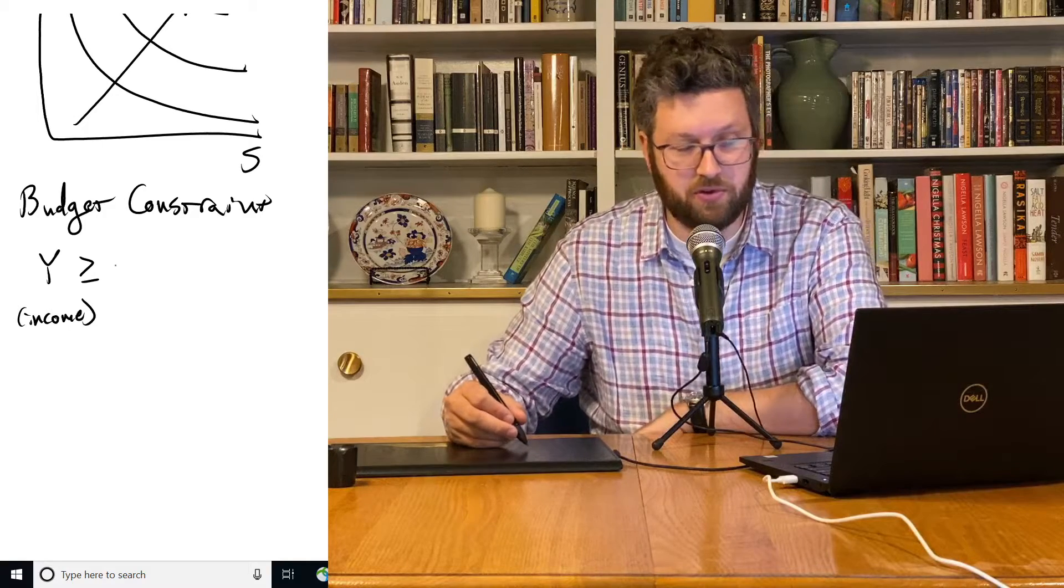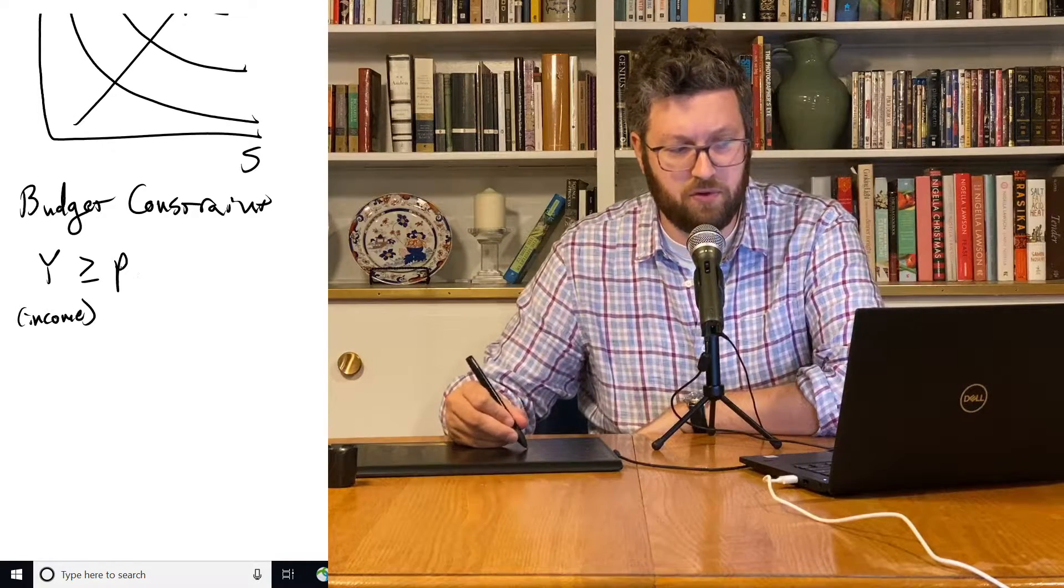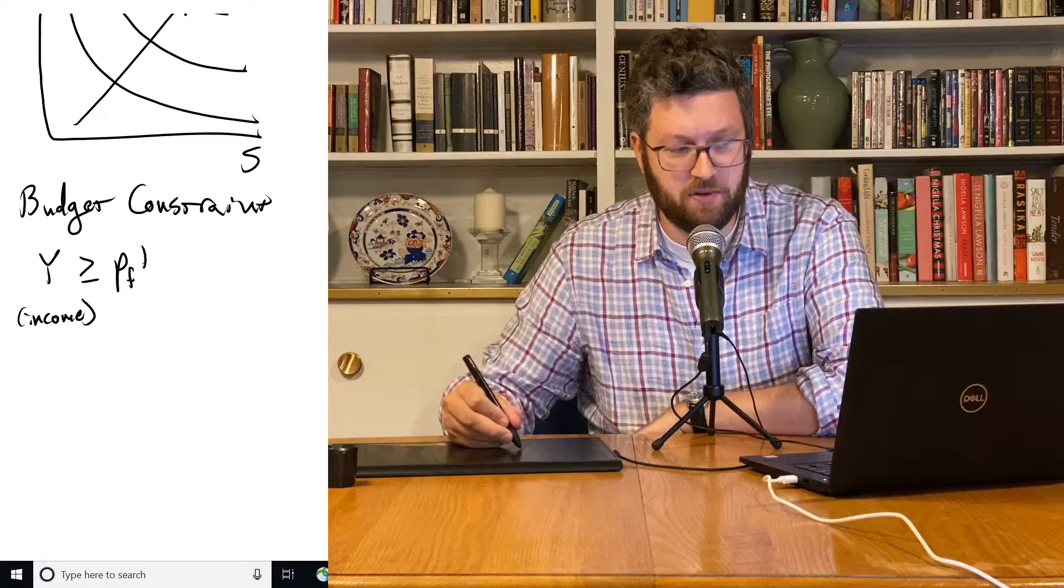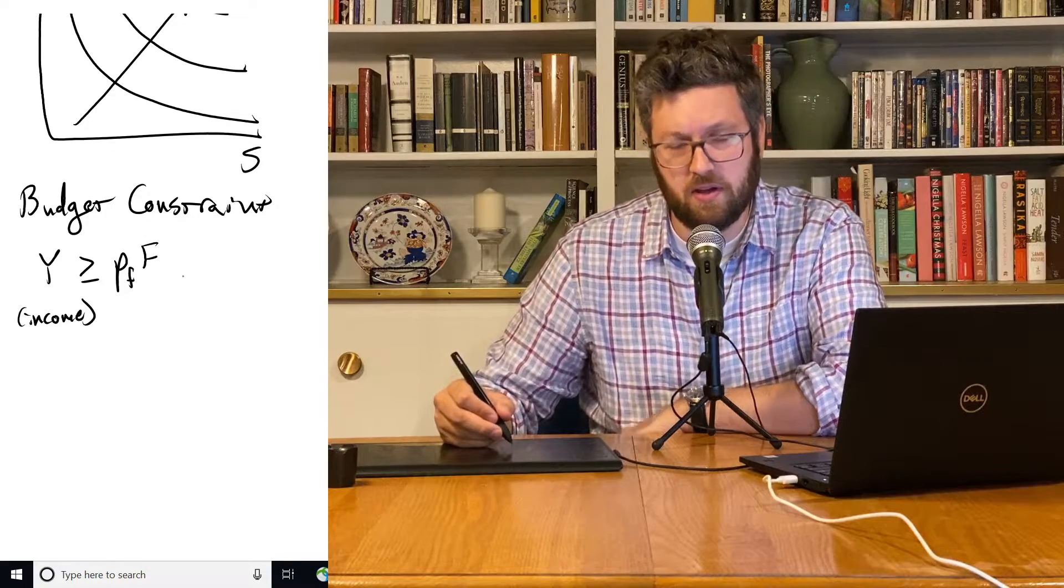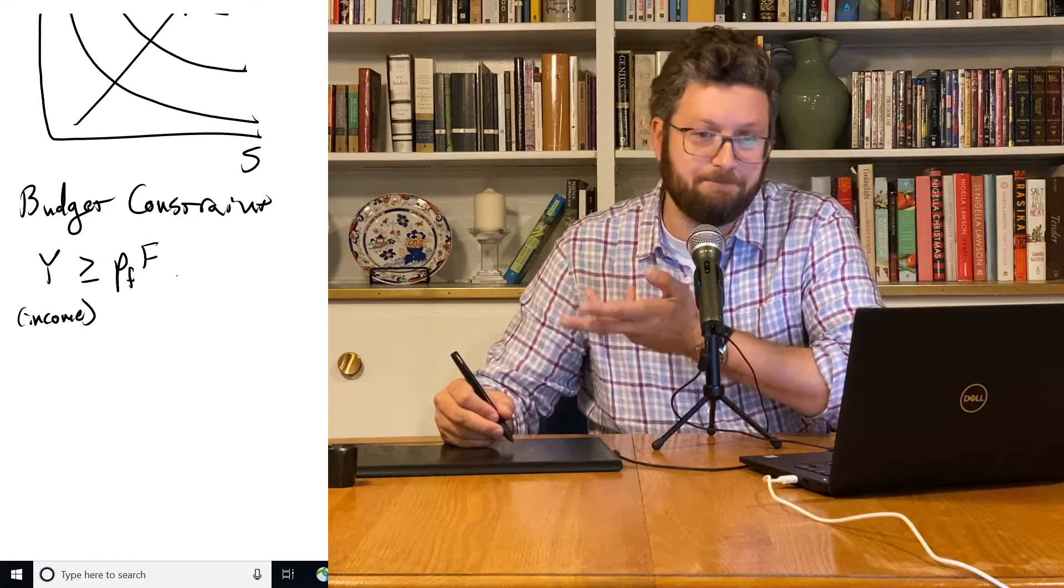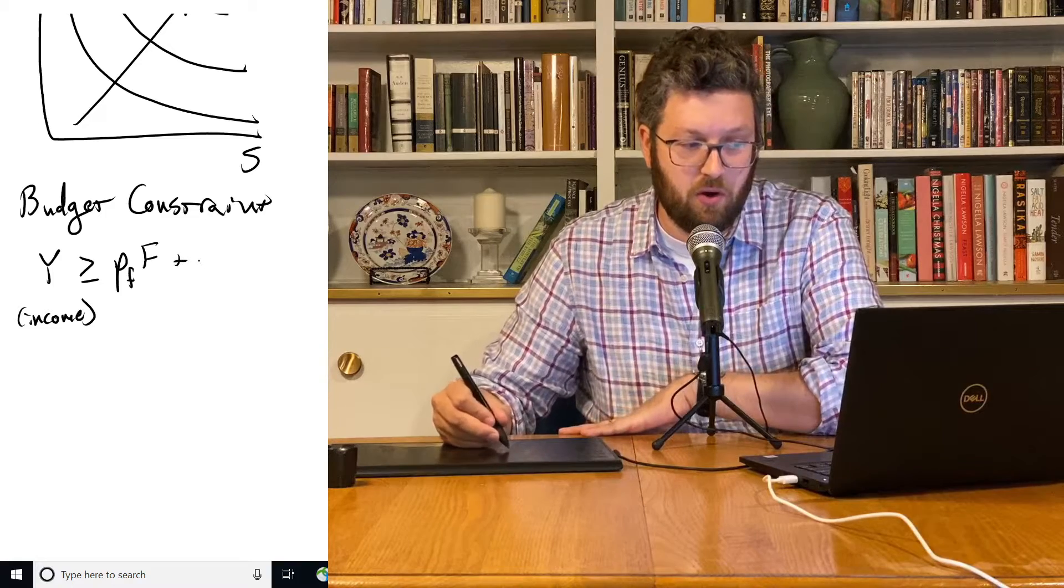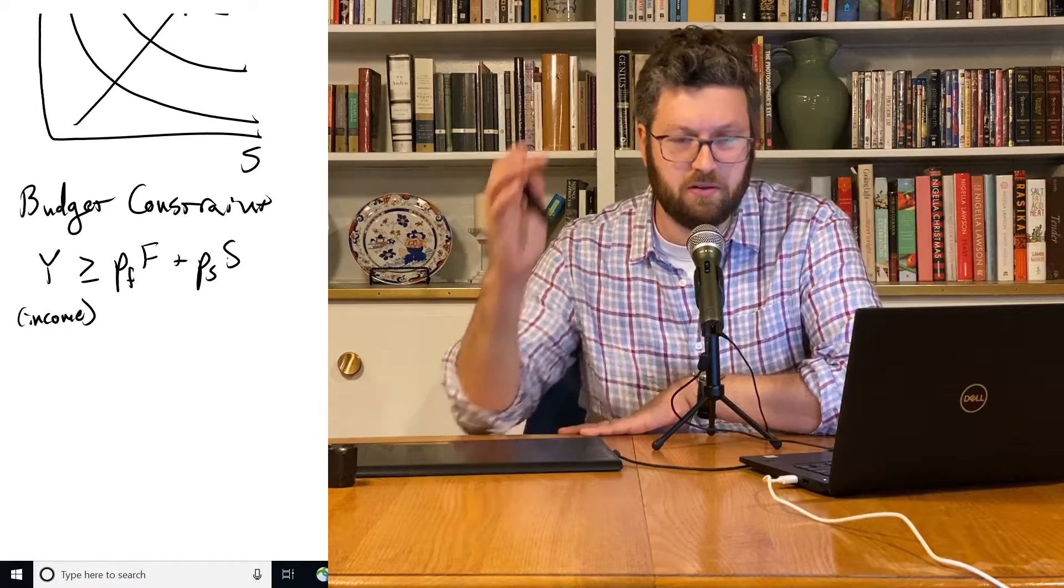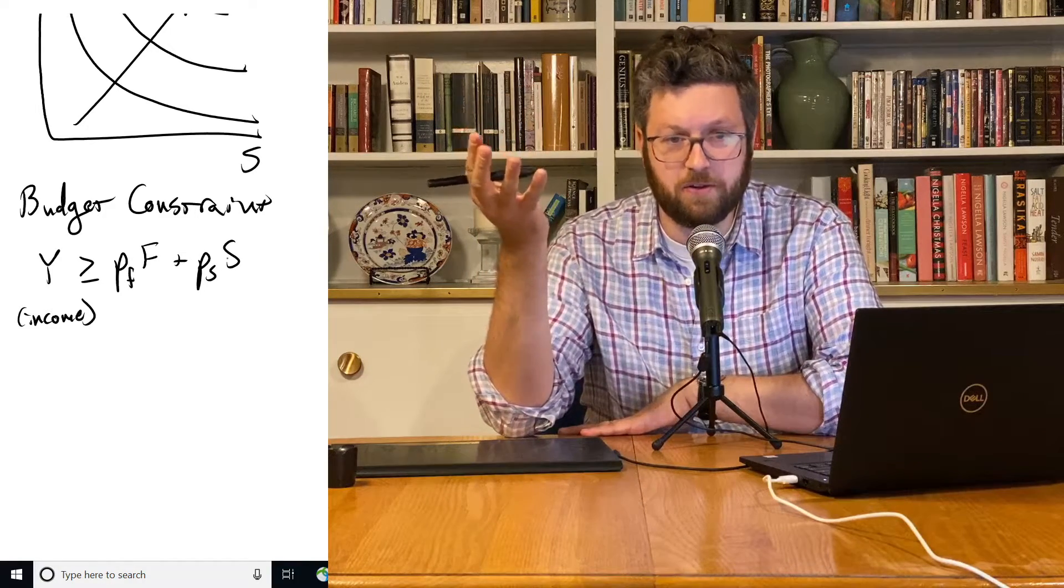And in this simple example, there's two ways you can spend your money. You can buy food, and let's say the price of food is PF. We multiply that by the amount of food you buy, and that's your spending on food. Or you can spend it on shelter, and that's your spending on shelter.